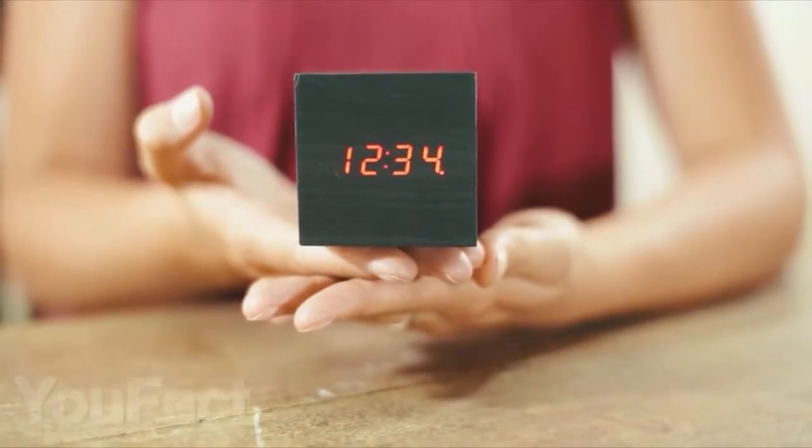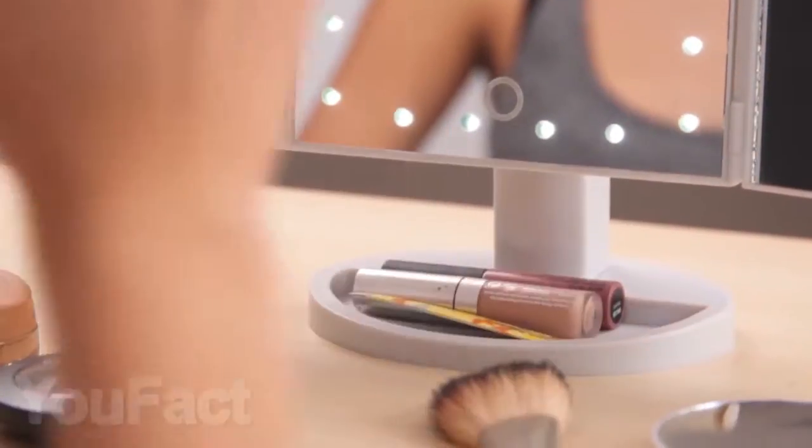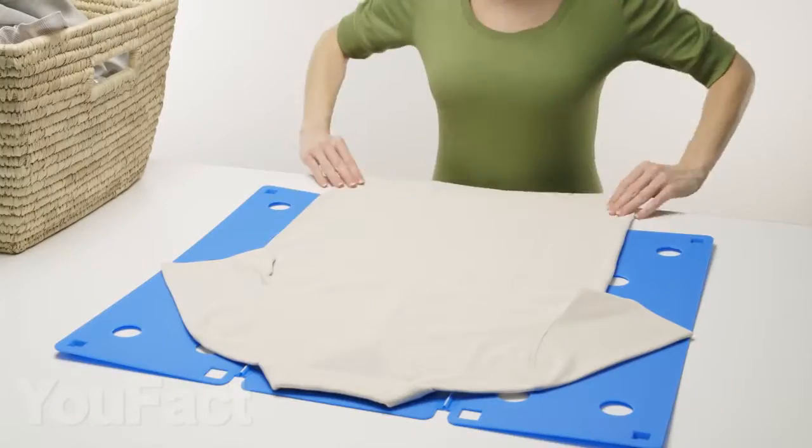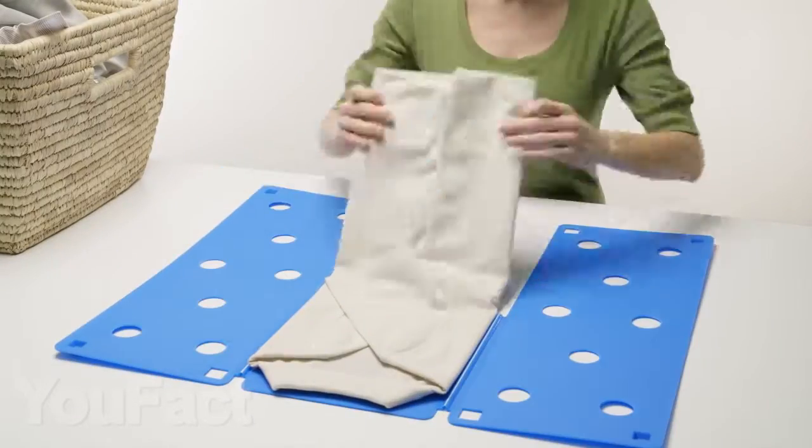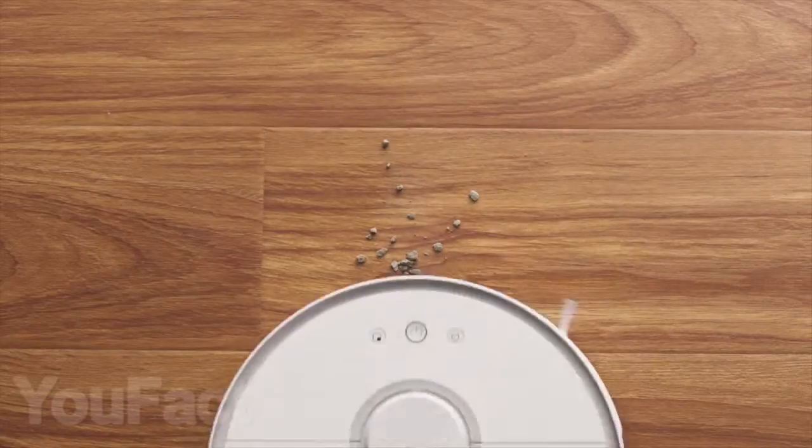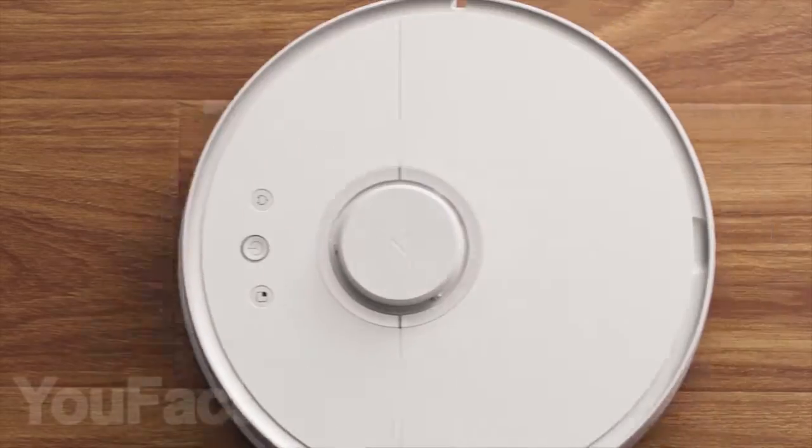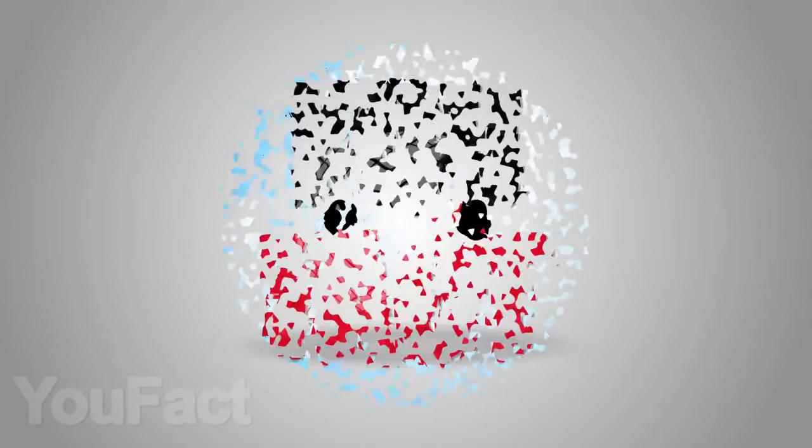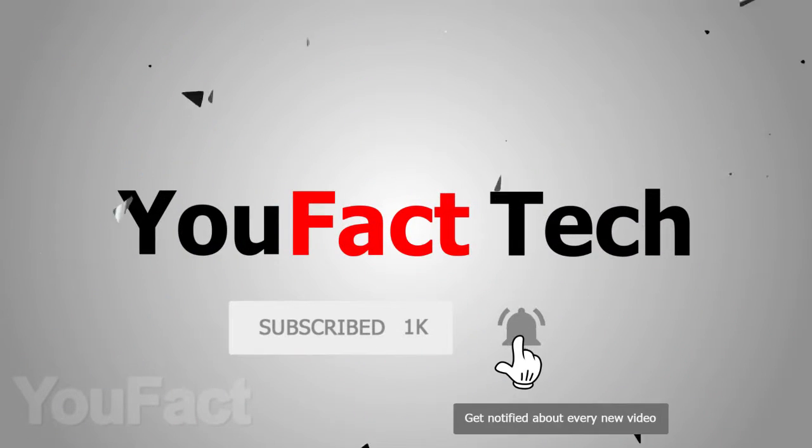Hi friends! Today you will see 15 cool and useful gadgets for home and learn how to kill mosquitoes with a tennis racket, charge your phone without wires, and how to neatly fold clothes in just a couple of seconds. As usual, you will find links to all products in the description below the video. In order not to miss our new videos, subscribe to the channel and press the bell.